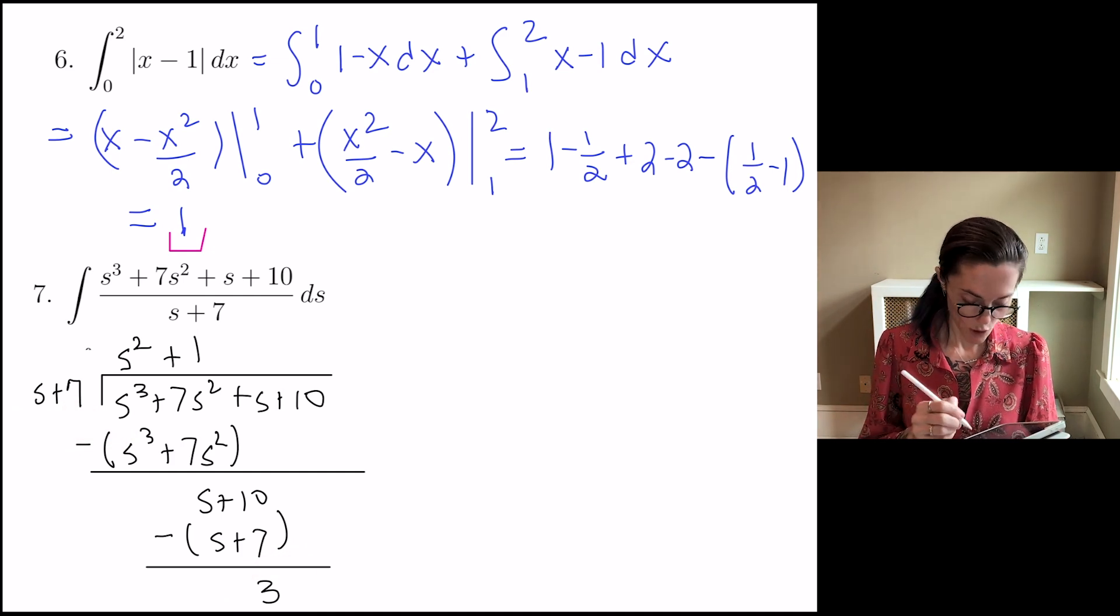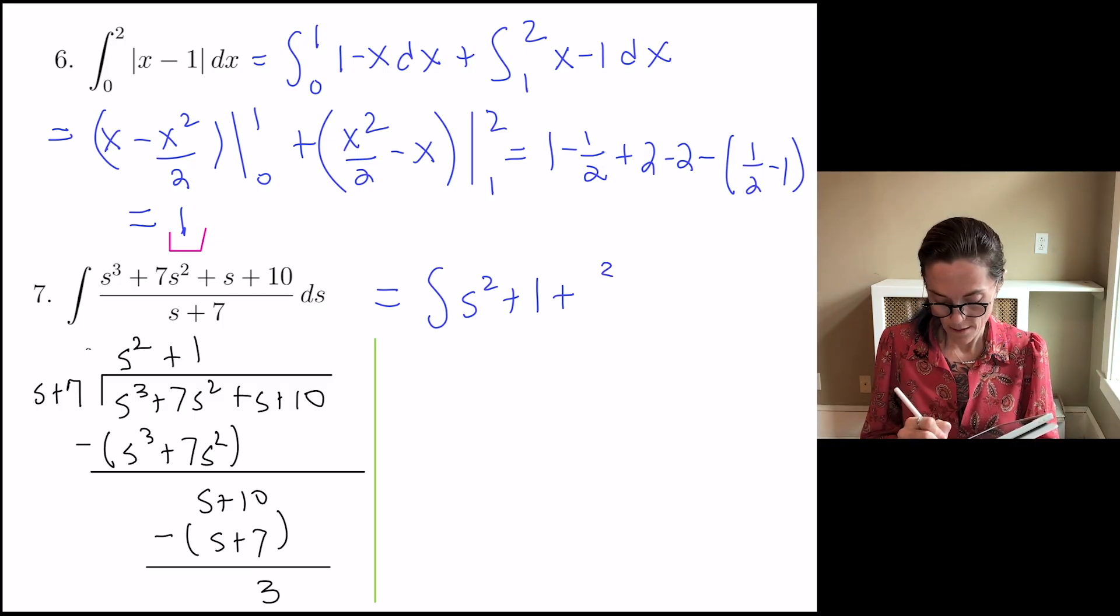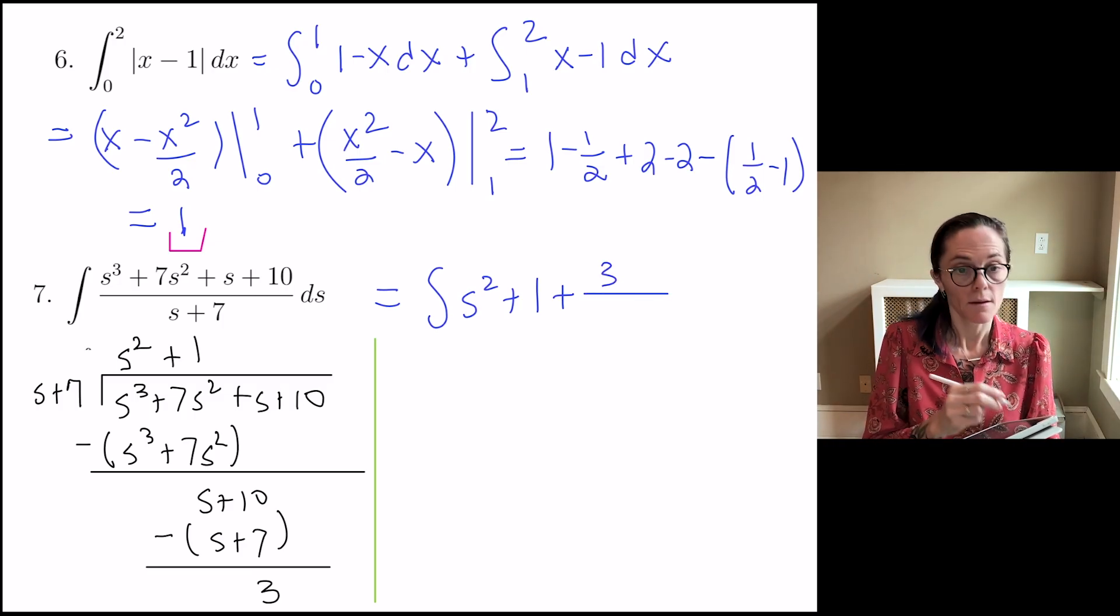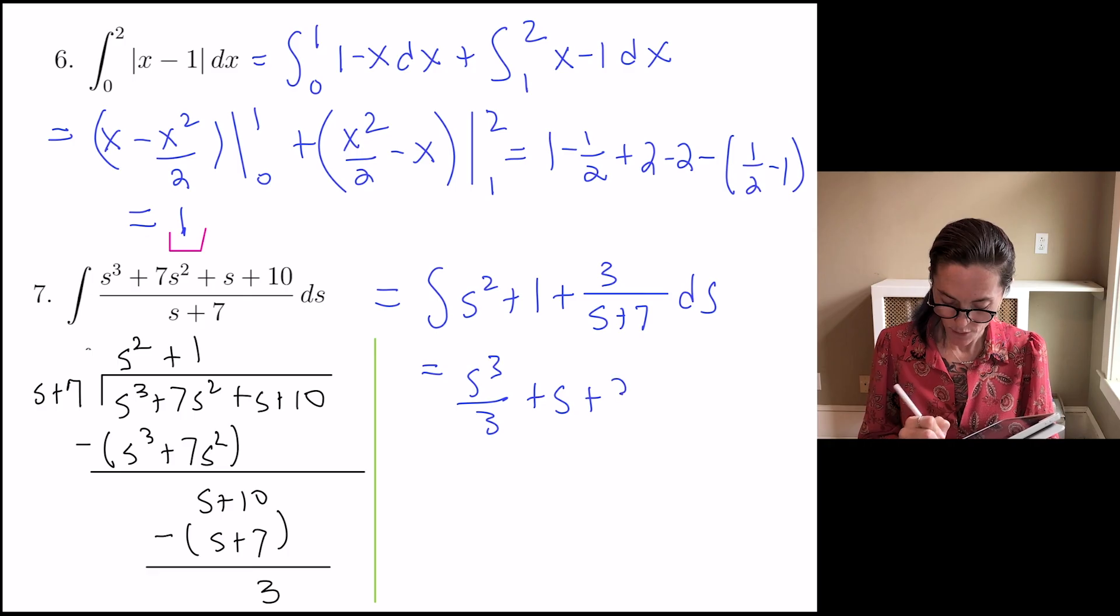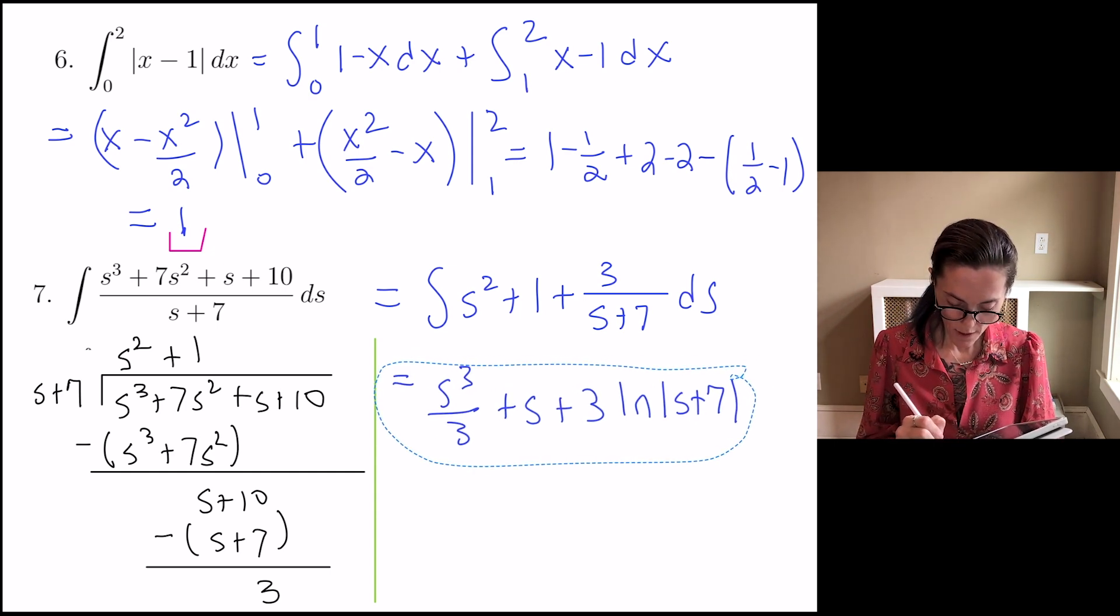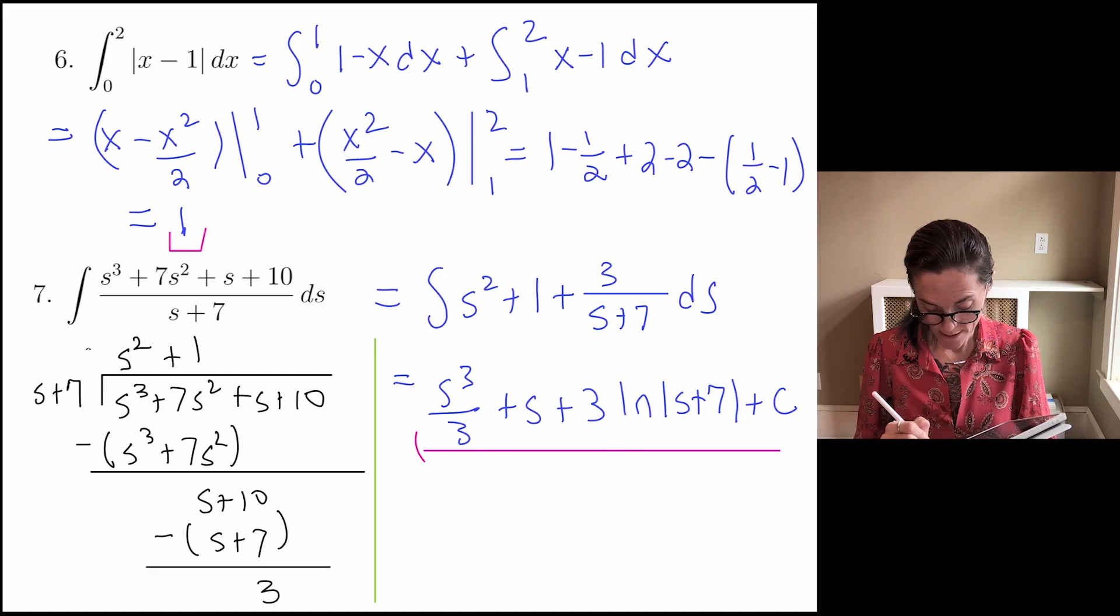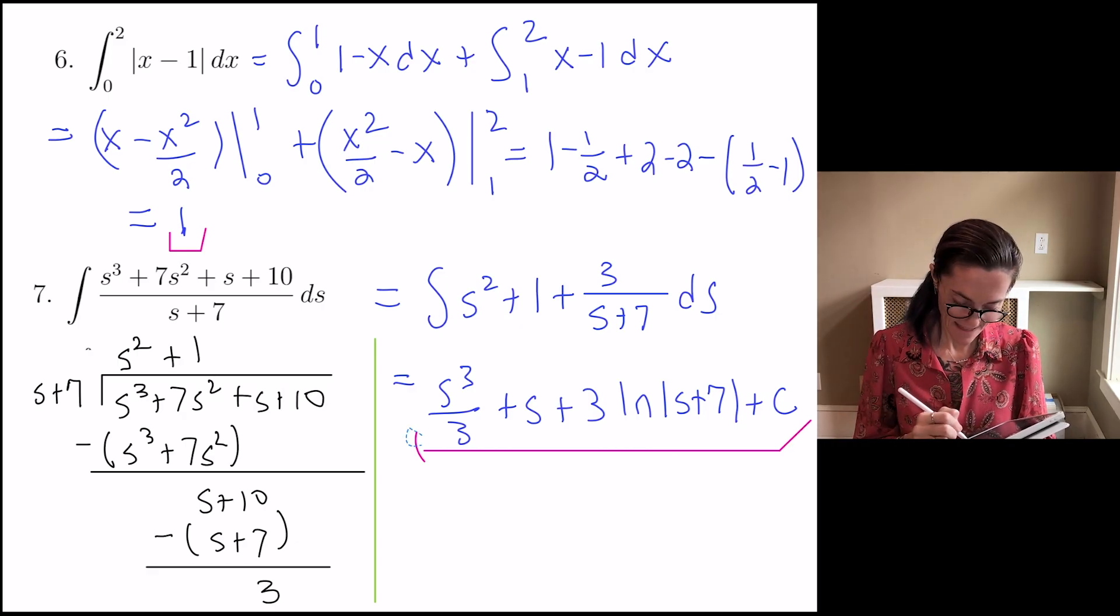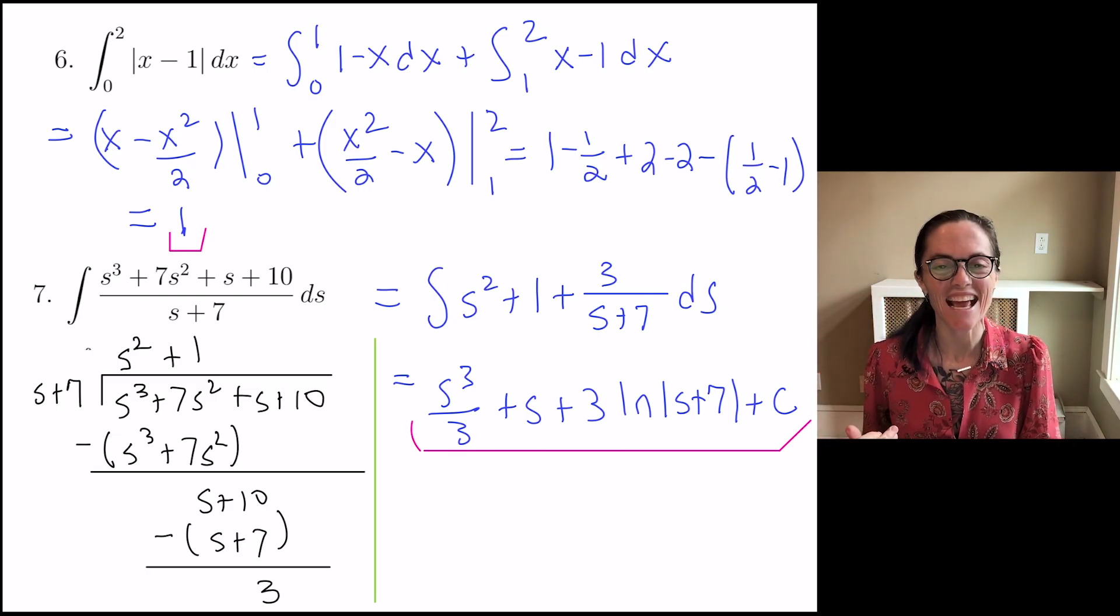Now I'm ready to actually go back and do the integration. My long division tells me that this integrand is s squared plus 1 plus 3 divided by s plus 7. We have s cubed over 3 plus s plus 3 ln absolute value s plus 7 plus c. This is my final answer. The integration wasn't too bad once we long divide it. Thank you so much, everyone. This concludes the first seven integrals on our integration extra practice.